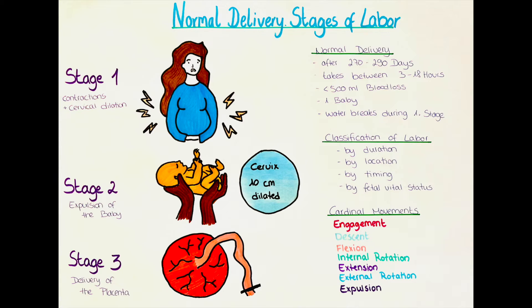The first stage is considered dysfunctional — or qualifies as labor dystocia — when the latent phase takes longer than 18 hours in nulliparous women (women who have never given birth before) and longer than 10 hours in multiparous women. Those are the most important characteristics for the first stage of labor.